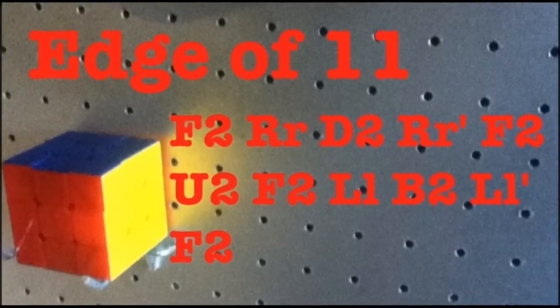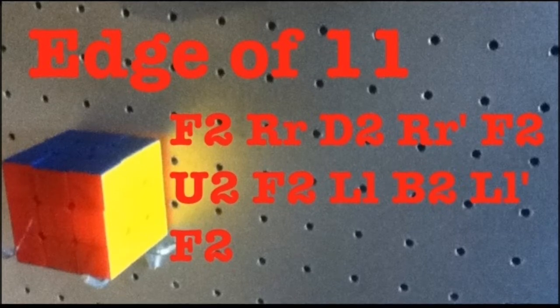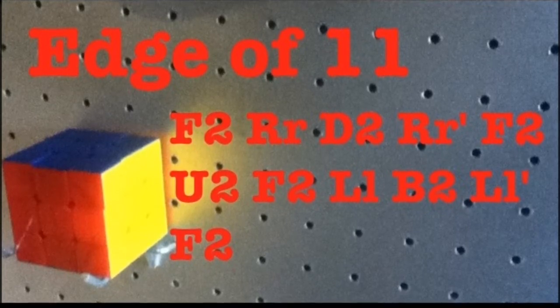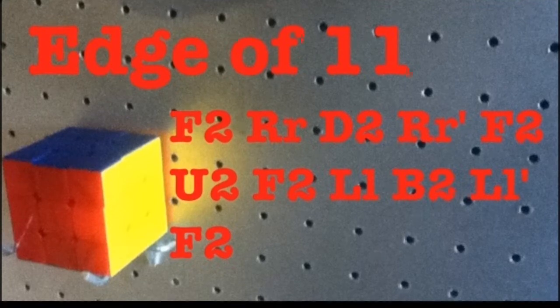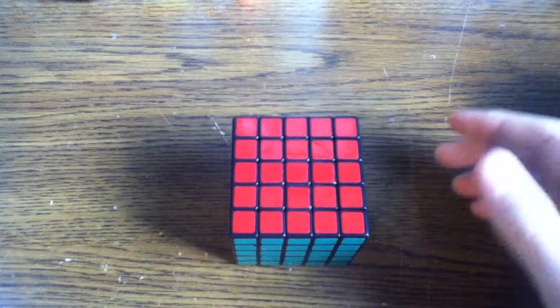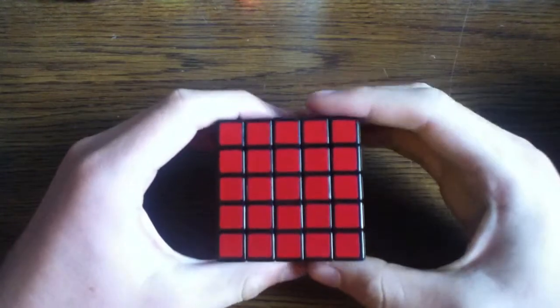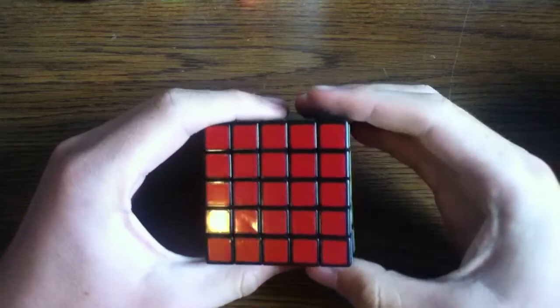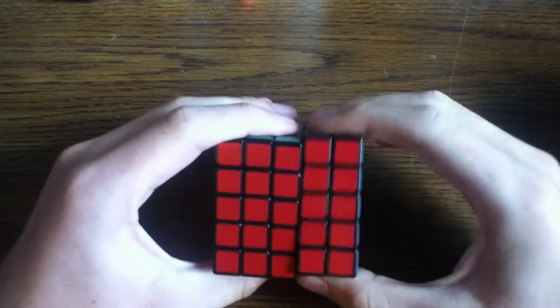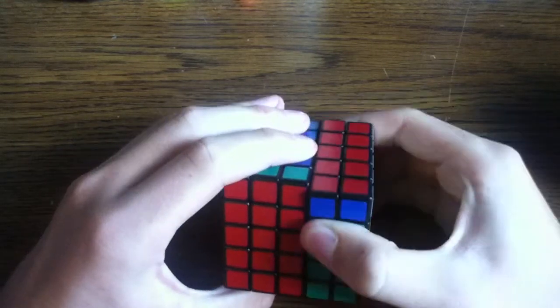Next up is the Edge of 11 algorithm. I call it this because it consists of 11 moves, and it switches edge pieces around on odd cubes. To perform the Edge of 11 algorithm, take the front side of the cube, rotate it 180 degrees, take the right two sides of the cube, rotate them 90 degrees clockwise.